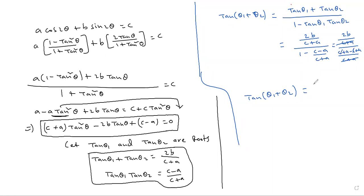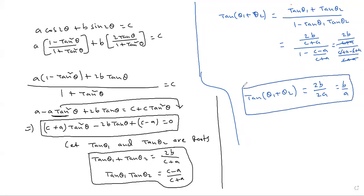After cancellation of (c + a), tan(θ₁ + θ₂) = 2b / 2a = b/a. So the final result is tan(θ₁ + θ₂) = b/a.